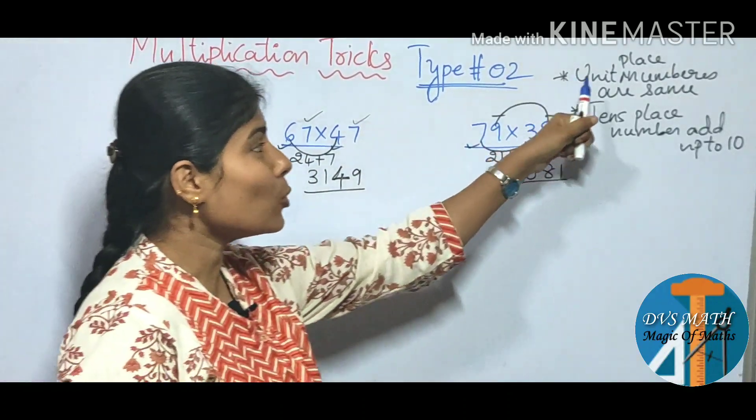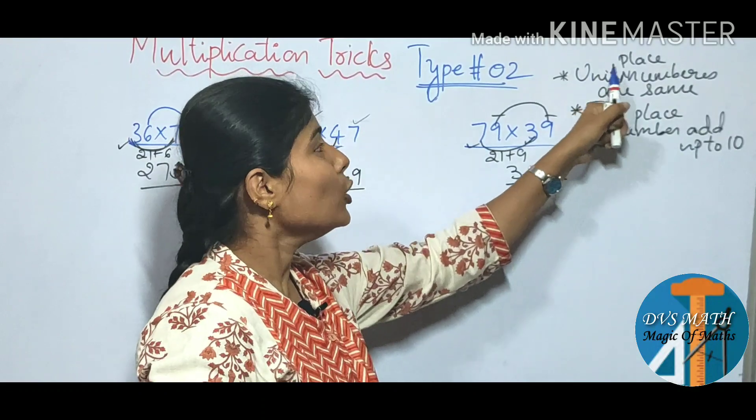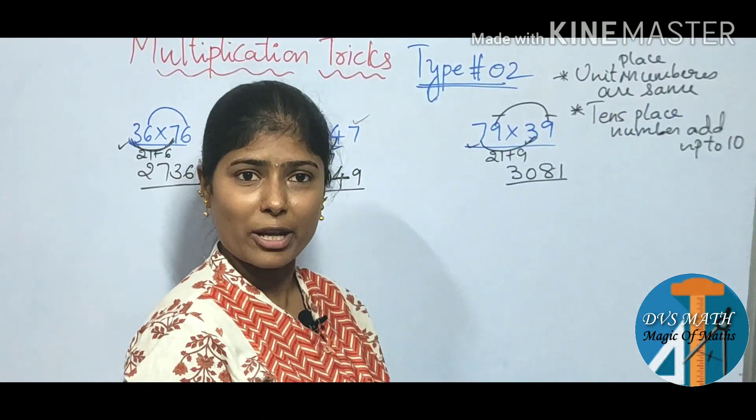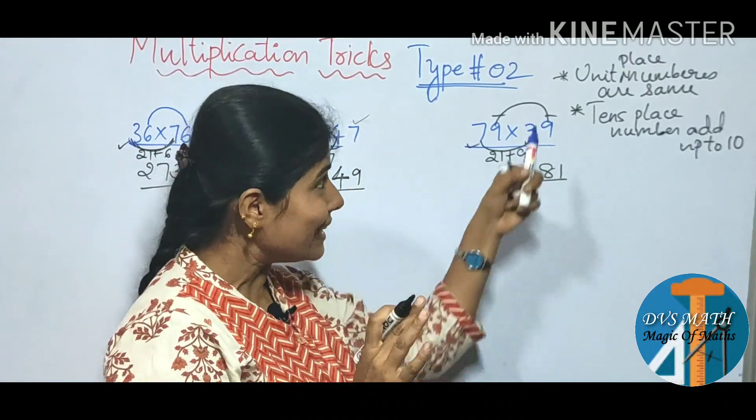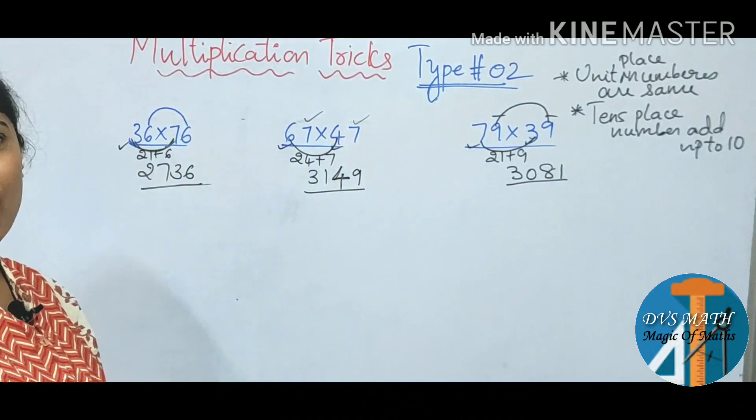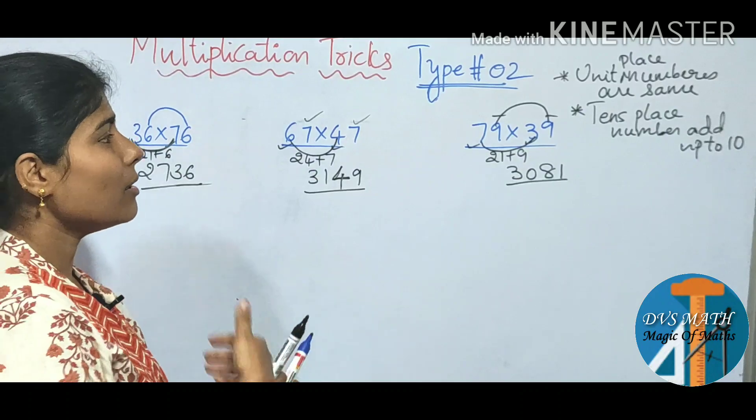So 3081. So this rule apply again. Unit place is same. 10s place is 10 times. So we try to practice these numbers.